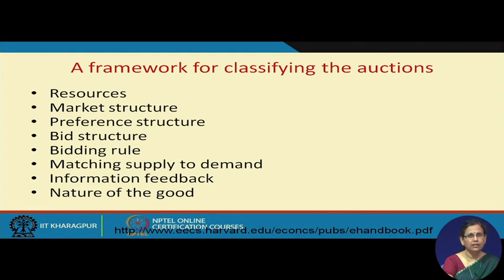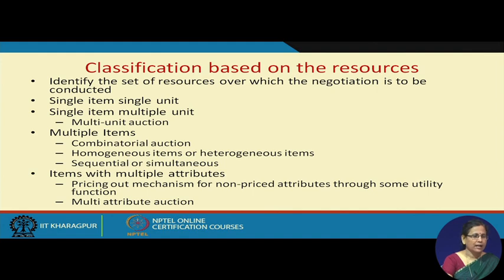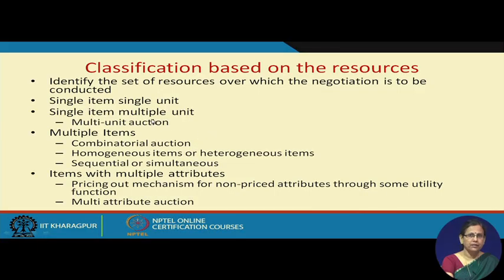Let us try to classify auctions — auctions can be classified in many different ways and we are going to look at each of them separately. The first classification is based on resources. You identify the set of resources over which negotiation is to be conducted: it can be single item single unit, single item multiple units, multi-unit auction, or multiple item auction.